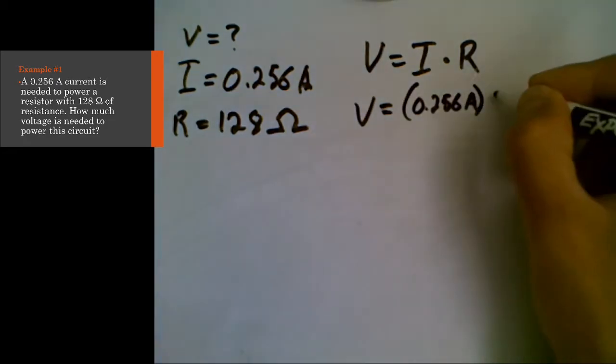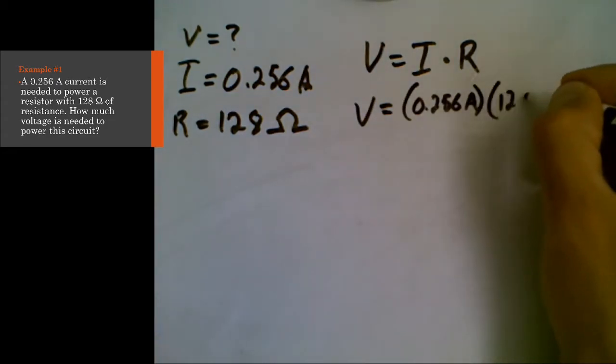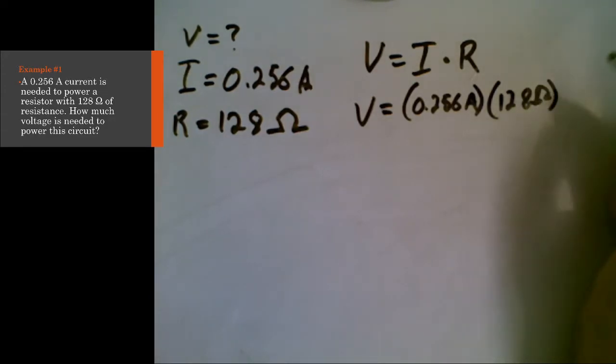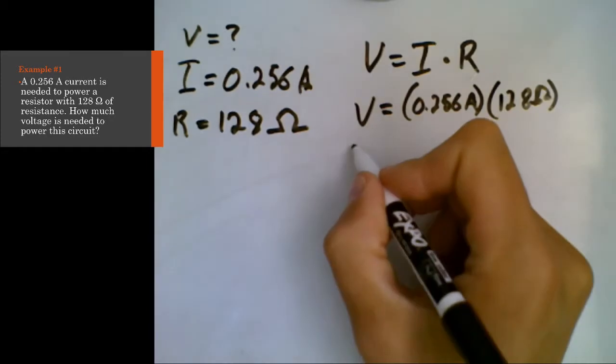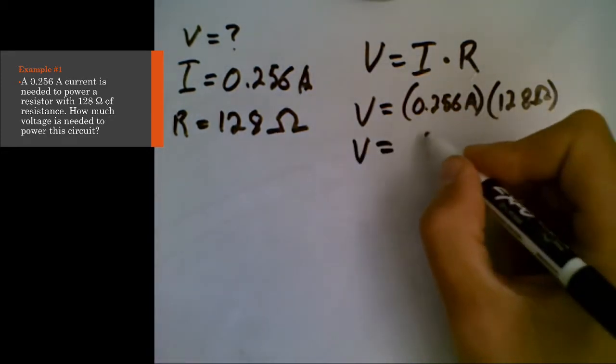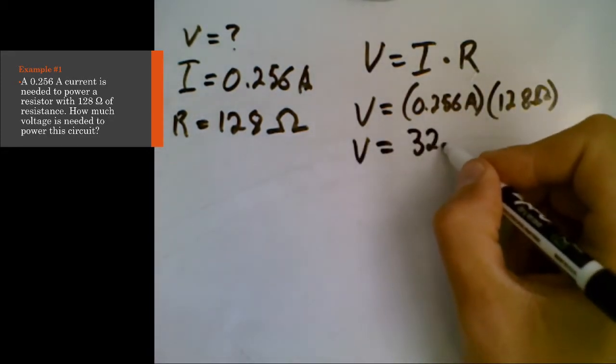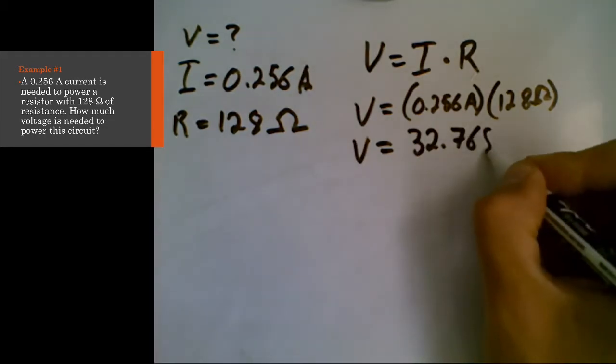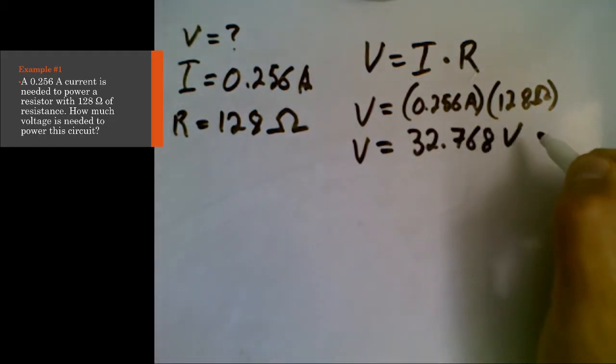So all we have to do is plug our numbers into this equation. So 0.256 amps multiplied by 128 ohms. When we actually do this calculation, we find that we need 32.768 volts.